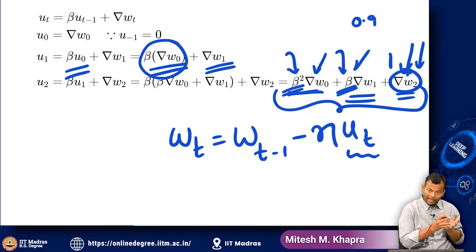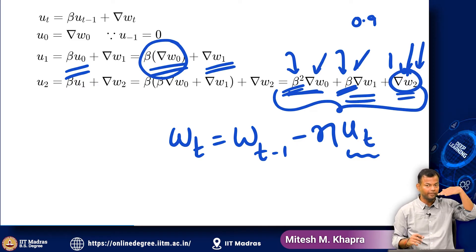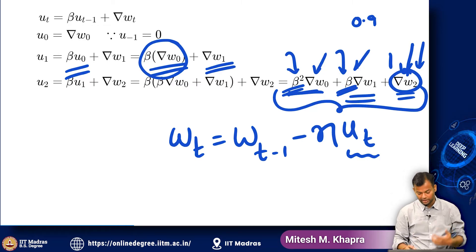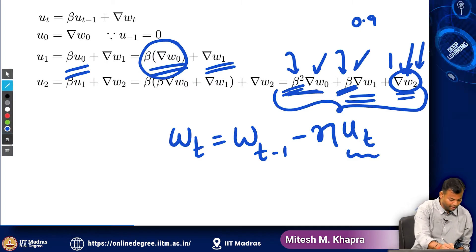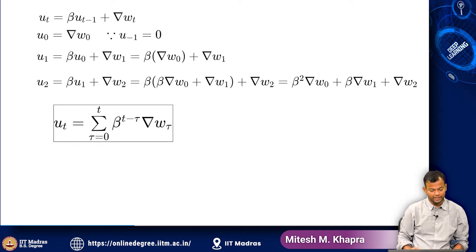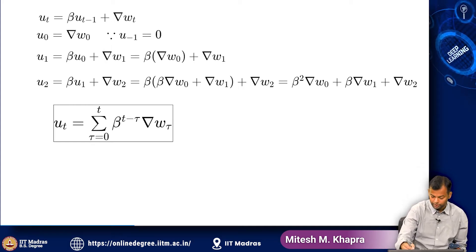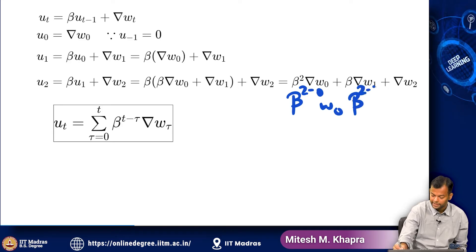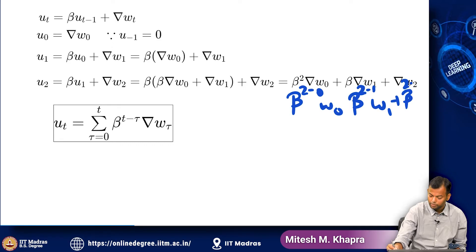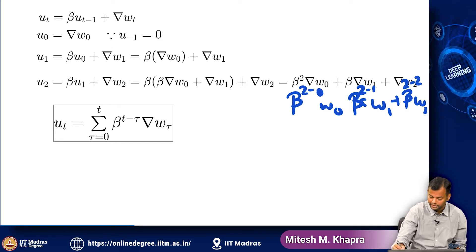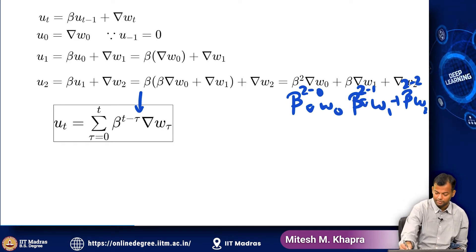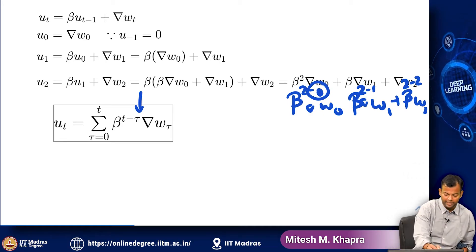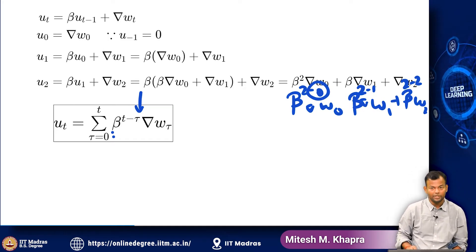Instead of moving just by the current gradient, you are accumulating all the history, and collectively this sum tells you to move by a larger amount. That is exactly what you want on flat surfaces — at every time step your movement is slow, but if you accumulate the history your movement becomes fast. So u_t is essentially the sum from tau=0 to t of beta^{t-tau} times the gradient at tau — an exponentially weighted average of current and all past gradients. Gradients from very long ago will have very little weight in this cumulative history.